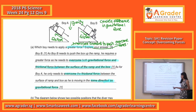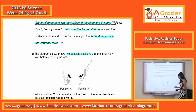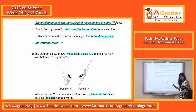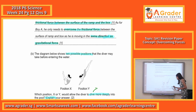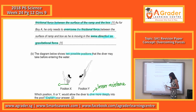Now let's look at part B. The diagram shows two possible positions that the diver may take. Which position — X or Y — allows the diver to dive more deeply into the pool? To dive more deeply means there is less resistance. The surface area of the person has something to do with resistance. Position X has a larger surface area.